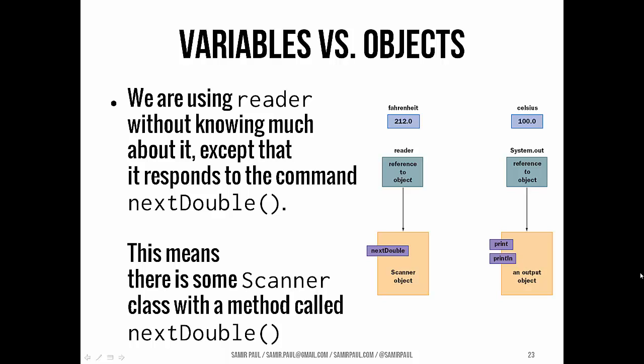We're using reader, our Scanner object without really knowing that much about it, except that it responds to the command nextDouble. We don't know anything about how nextDouble is implemented. We haven't seen the code for nextDouble. We haven't seen what specific things the program who wrote it decided to do. All we know is, Hey, this is what it does and we're going to trust it. Okay. So that means somewhere. Well, really we know where it's in java.util. There's a Scanner class that somebody wrote and it's got a method called nextDouble in it.